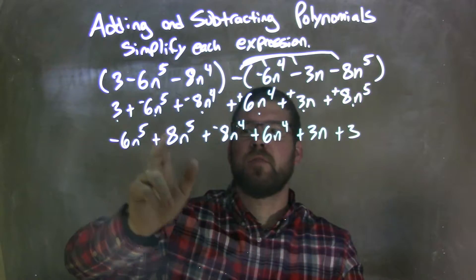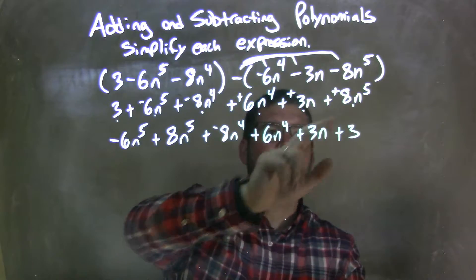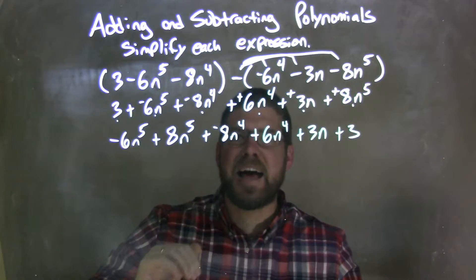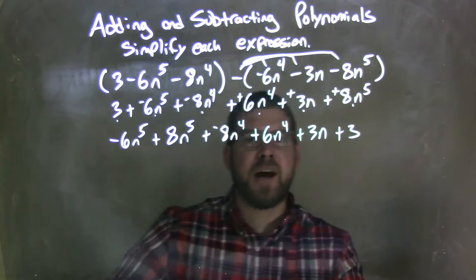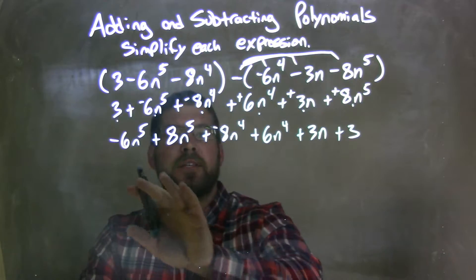6n to the 4th right there. 3n right there. 8n to the 5th right there. Fantastic. And all of them have dots on it. Kind of a way to double check, make sure I brought everything down. Now let's combine our like terms.